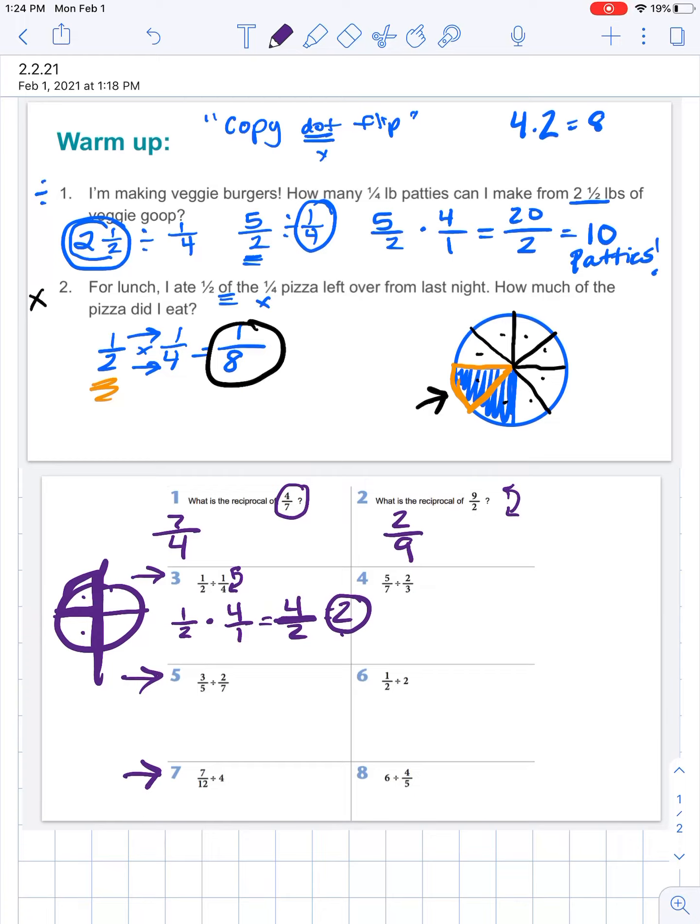The next one, copy dot flip because it's division. Three fifths, copy dot multiply, and then flip seven over two. Three times seven is twenty one, five times two is ten. We have got an improper fraction. I never want your answer in that form. So let's think about it. Ten goes into twenty one twice and there's one left over. Two and one tenth.